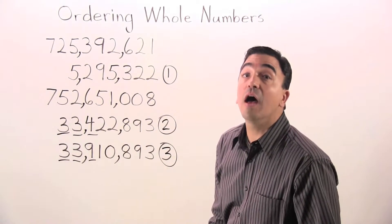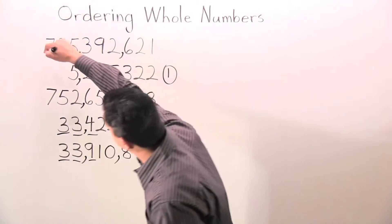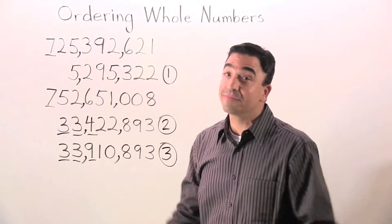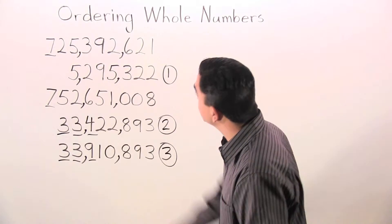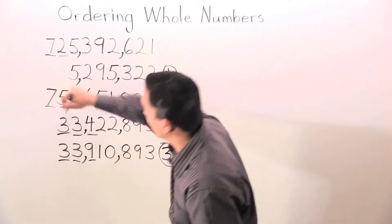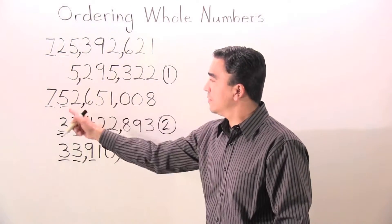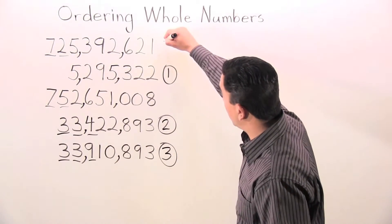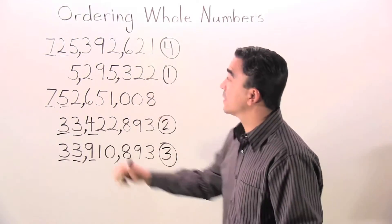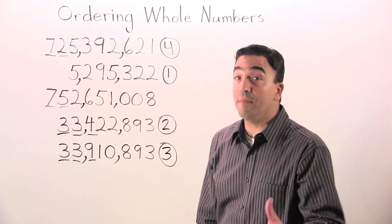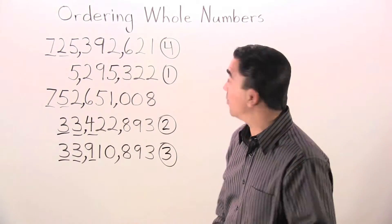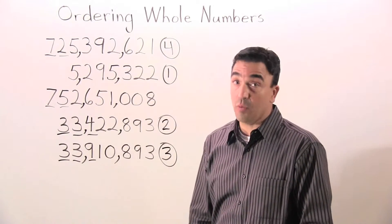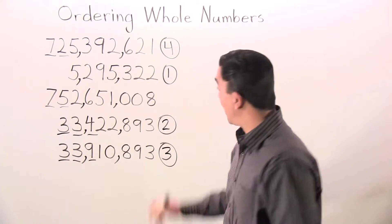Let's first look at the hundred millions. Seven hundred twenty-five million, three hundred ninety-two thousand, six hundred twenty-one, and that means number four.